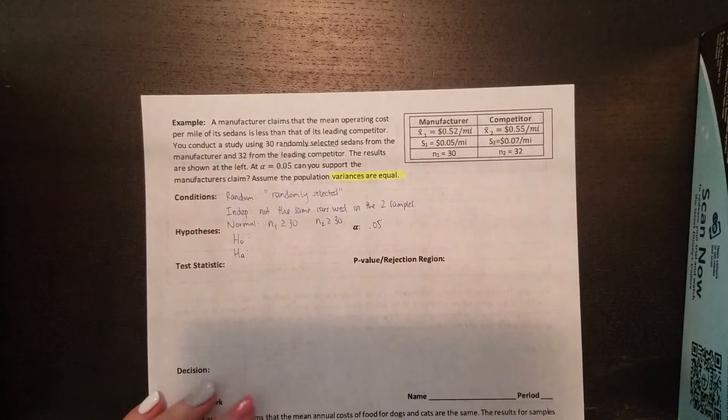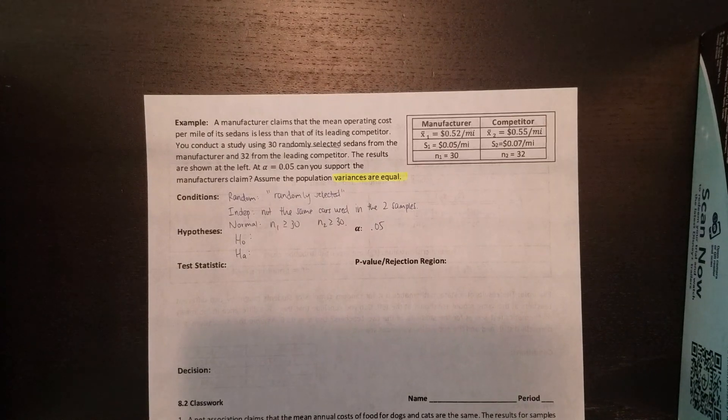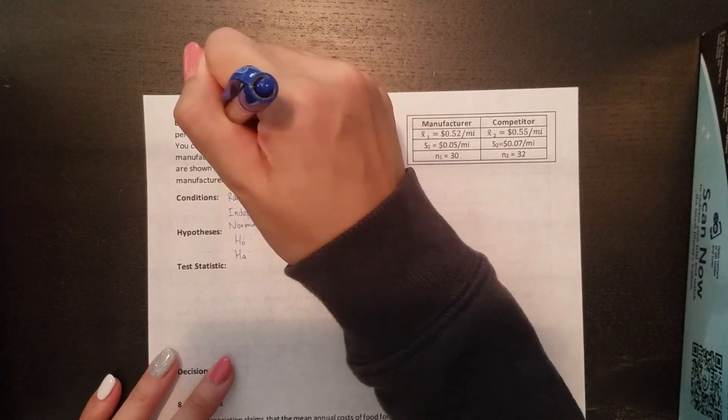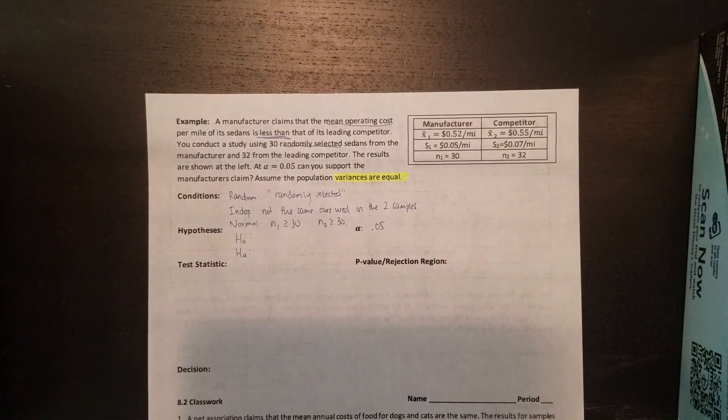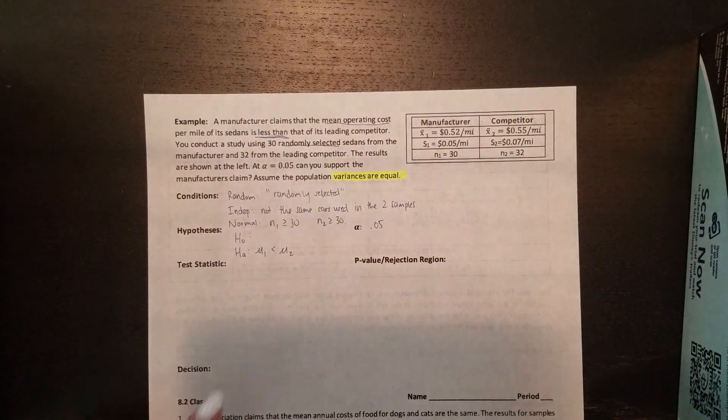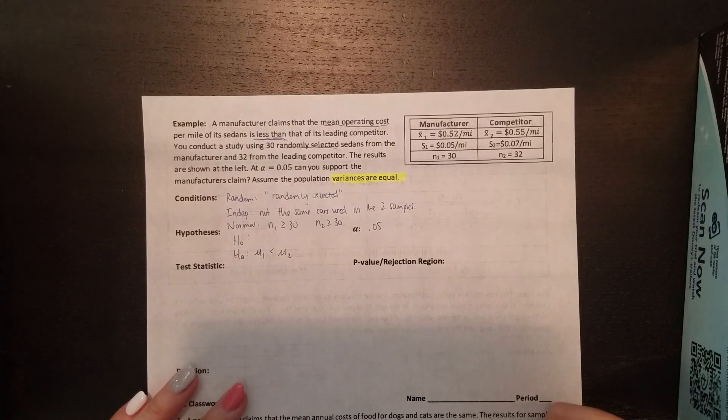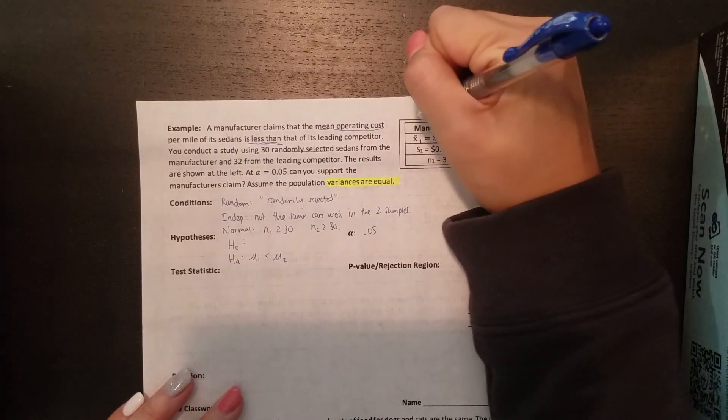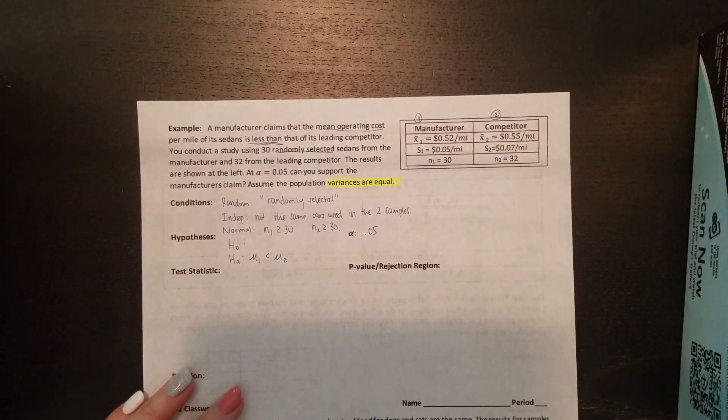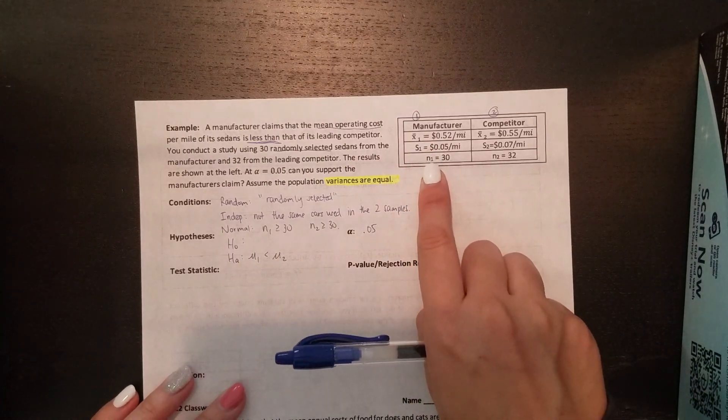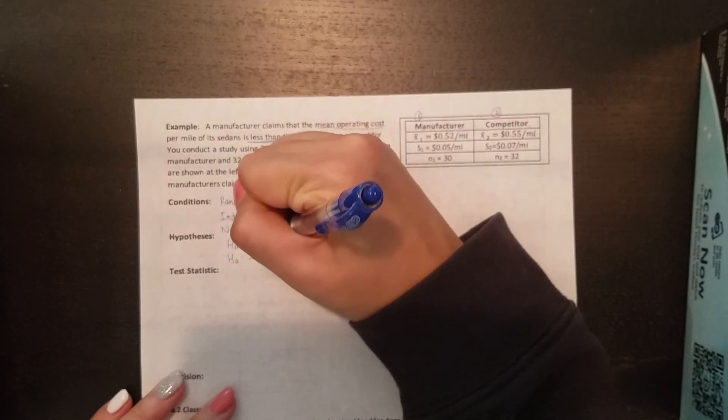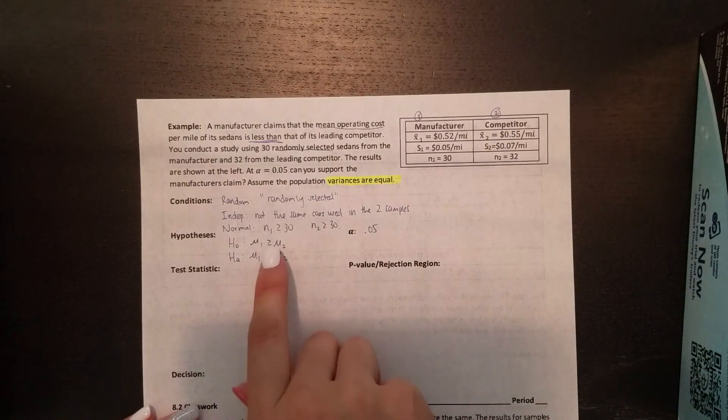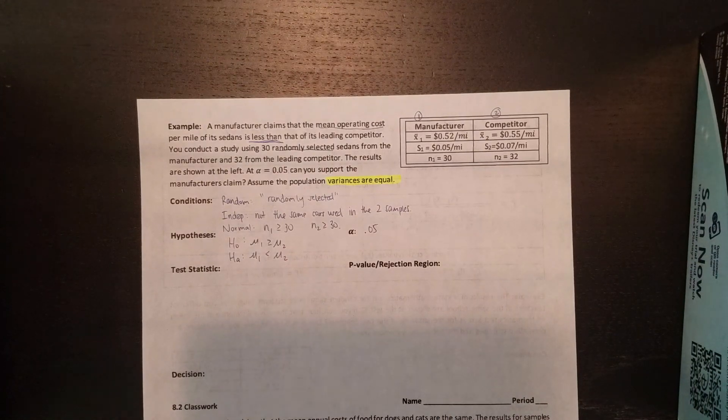Hypotheses. So H₀ and H_A. Reading through my problem, I think at the beginning it said the mean operating cost is less than that of its leading competitor. So that's a less than sign. Less than signs usually go in H_A. So that means my mean one is less than mean two. They said manufacturer's cost was less than the competitor. So that means manufacturers technically sample one, competitors technically sample two, which is also how I labeled my X̄₁, S₁, N₁. Anyways, so for our H₀, that means it has to be the opposite sign. So instead of facing left, it's facing the right with the equal sign.